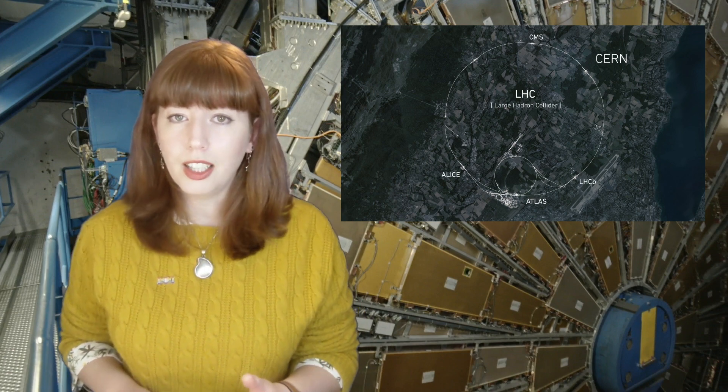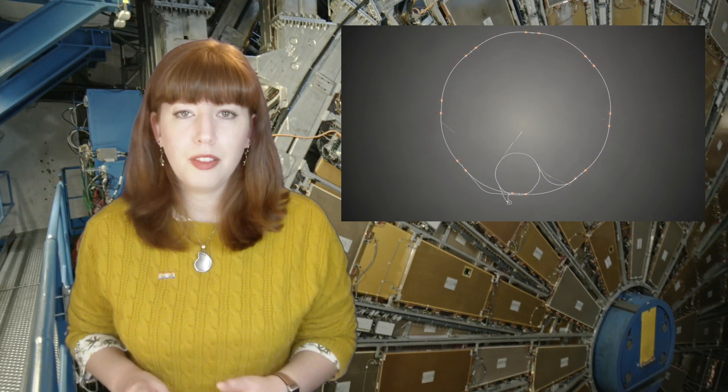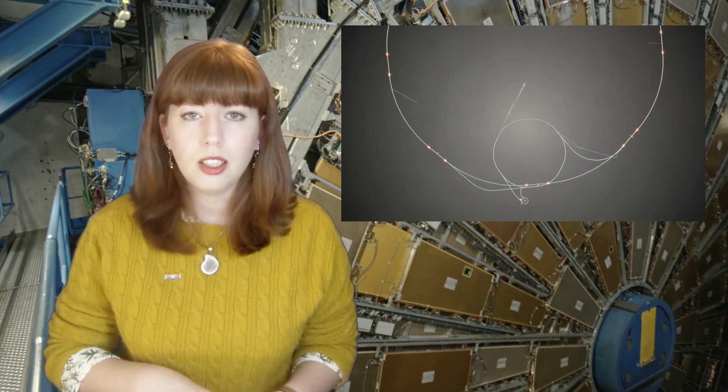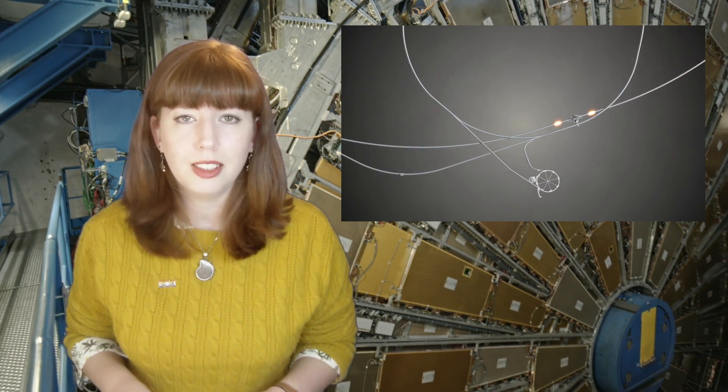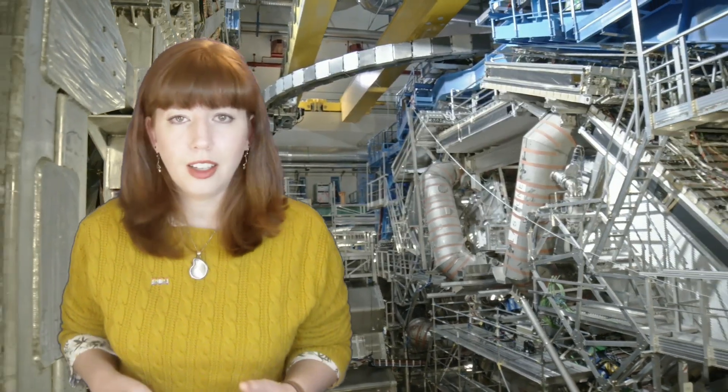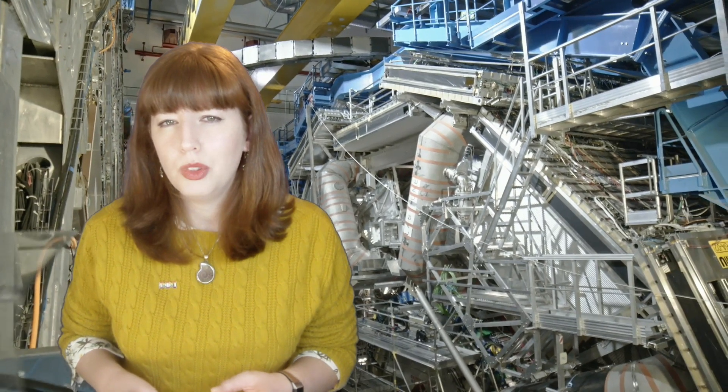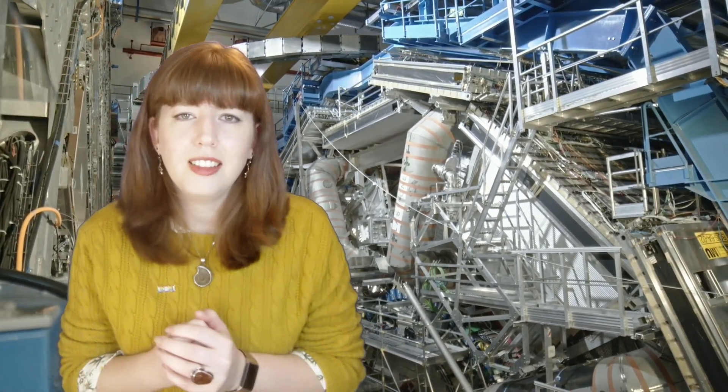Now, the Large Hadron Collider is a 27-kilometre-long circular particle accelerator, which takes protons or sometimes lead ions and accelerates them to almost the speed of light and then collides them in the centre of our detectors.